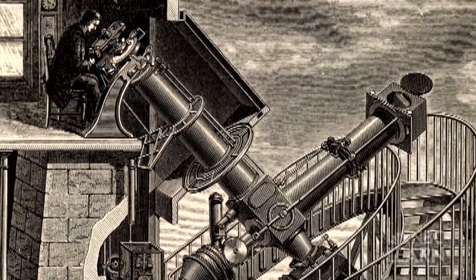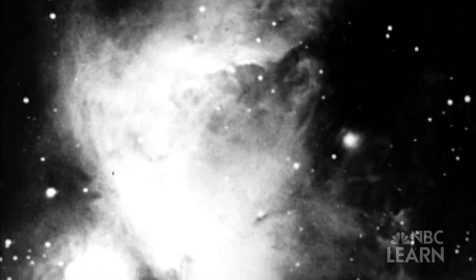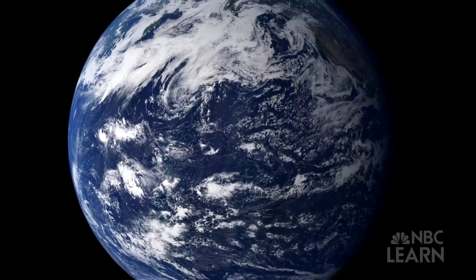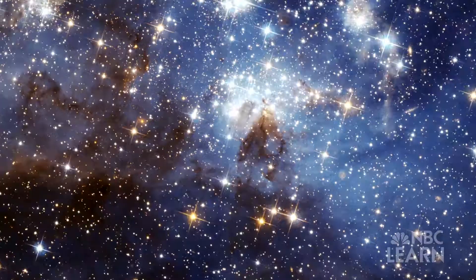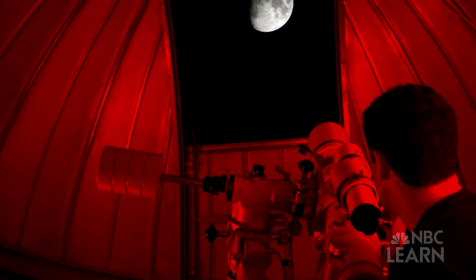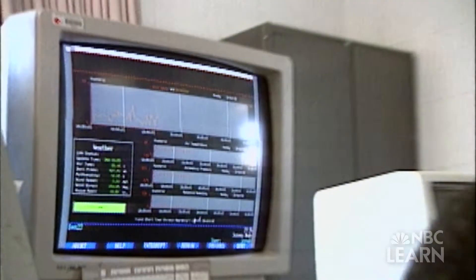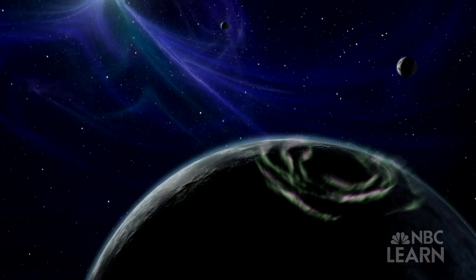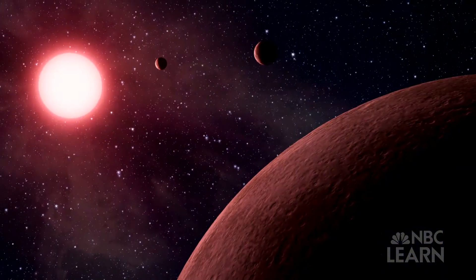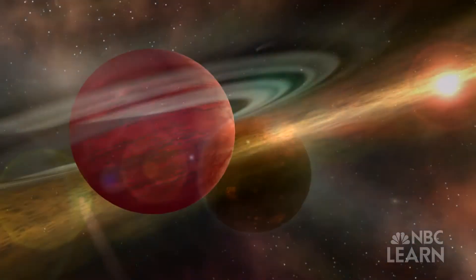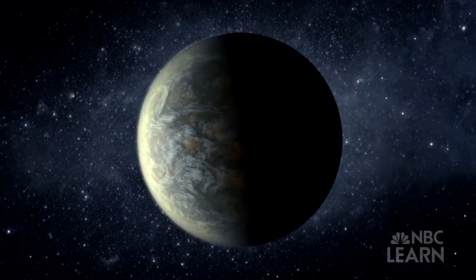For centuries, humans have looked to the night sky and wondered if there were any other planets out there, like Earth, orbiting the distant stars. Then in 1992, astronomers made the first discovery of a planet orbiting an alien star. Since that time, more than 700 extrasolar planets, or exoplanets, have been identified.